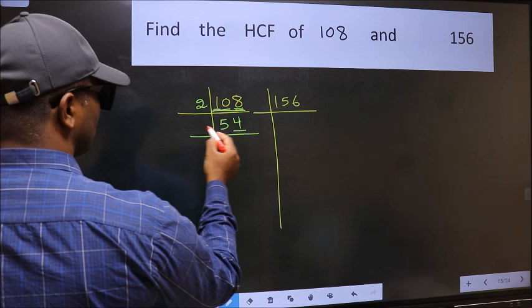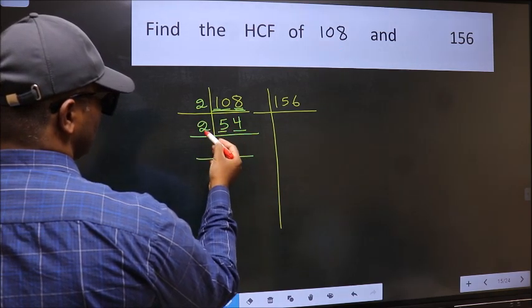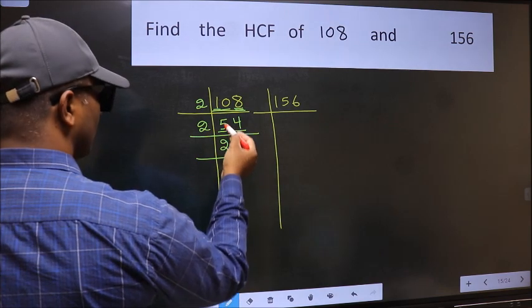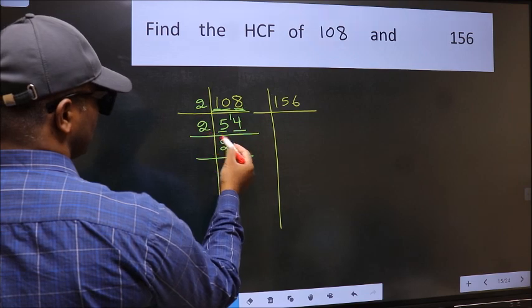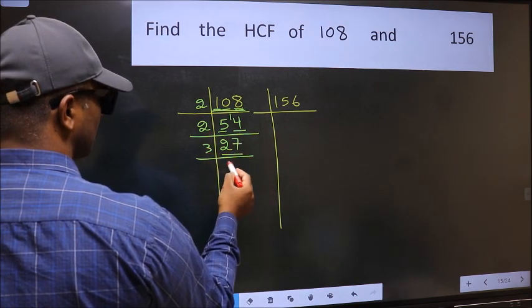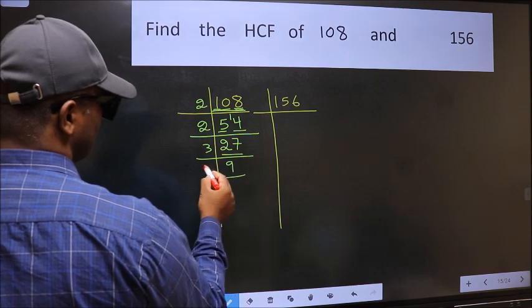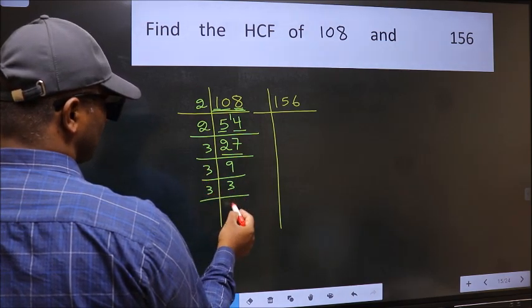Last digit 4 is even, so take 2. First number 5, a number close to 5 in 2 table is 2 times 2 is 4. 5 minus 4 is 1, 1 carried forward makes 14. When do we get 14 in 2 table? 2 times 7 is 14. Now 27, 3 times 9 is 27. 9 is 3 times 3. 3 is a prime number, so 3 times 1 is 3.